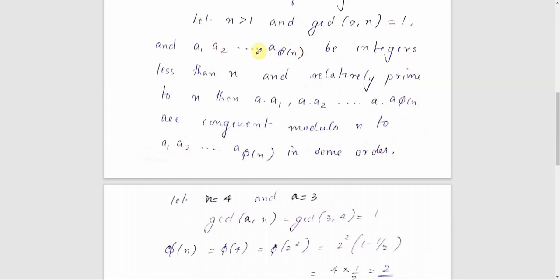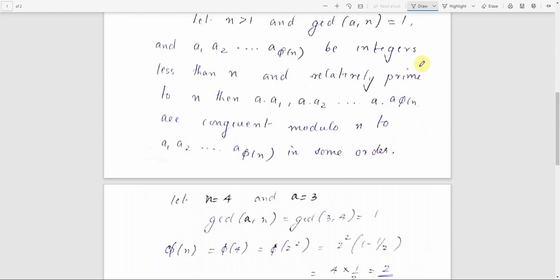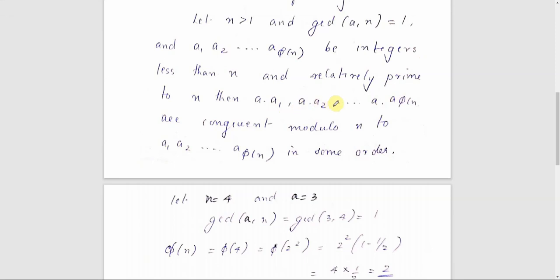φ(n) is the count of these numbers. We choose a1, a2, ..., a_φ(n), which are all less than n and relatively prime to n. We then generate the series: a·a1, a·a2, ..., a·a_φ(n). This new series will produce the same set in some order.